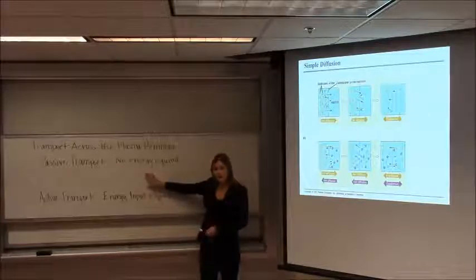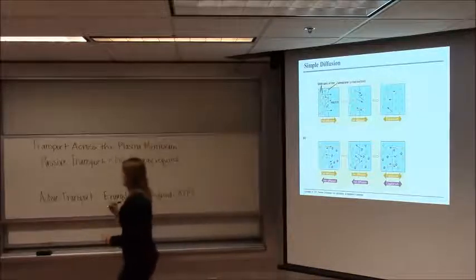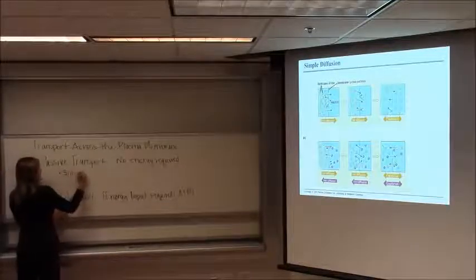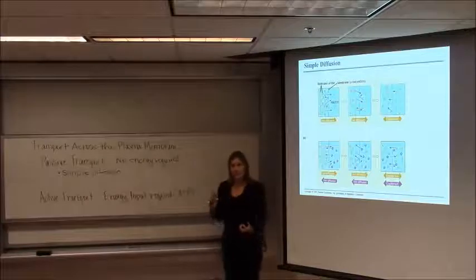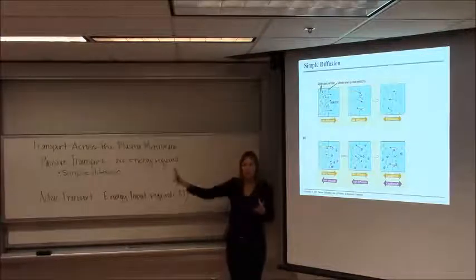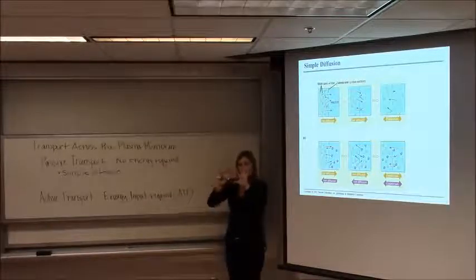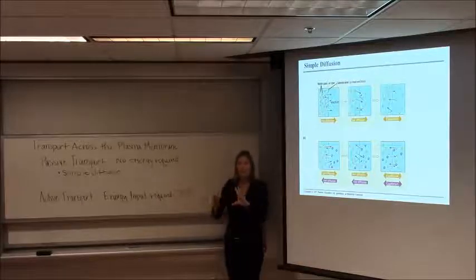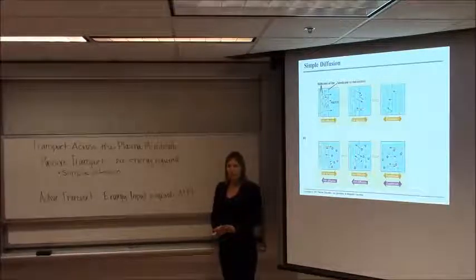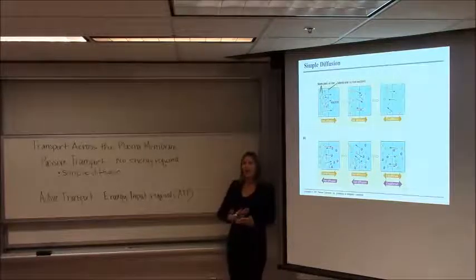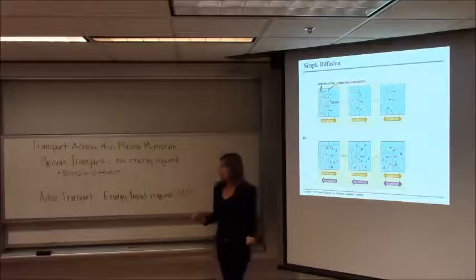There are a couple of categories of passive transport that are very important to understand. The first is called simple diffusion. If I stood in the corner of a room and blew out cigarette smoke, that smoke would slowly diffuse throughout the room — those molecules would spread without any energy required. It would happen because of a concentration gradient, with diffusion taking place from an area of high concentration to an area of lower concentration.